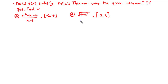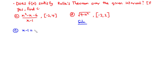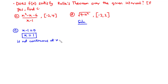Let's continue with C. We have a rational function with a numerator and a denominator. This type of function is continuous everywhere within the closed interval except at values of X where the denominator equals 0. Setting the denominator to 0: X minus 1 equals 0, so X equals 1. This means the function is not continuous at X equals 1.